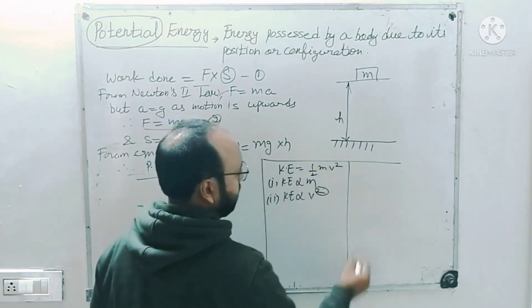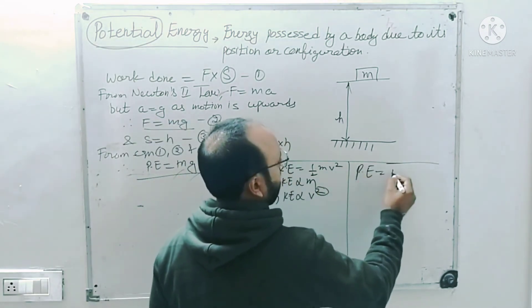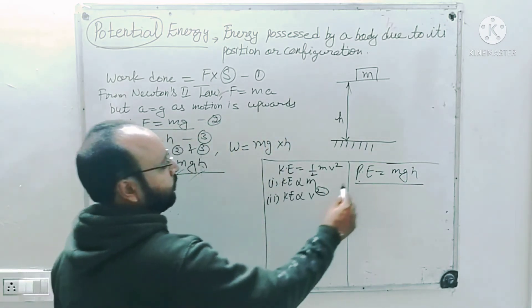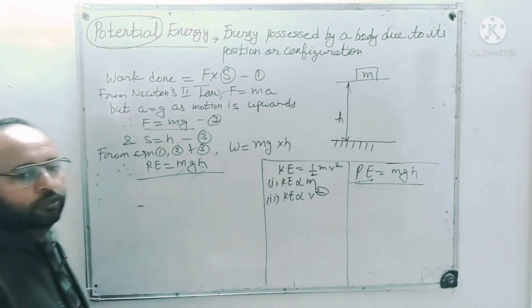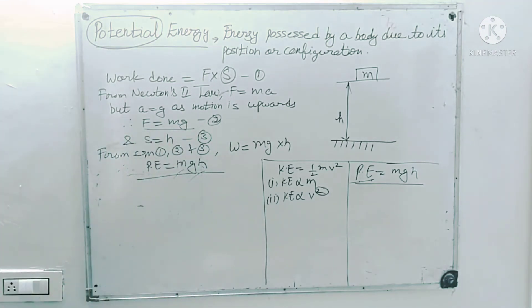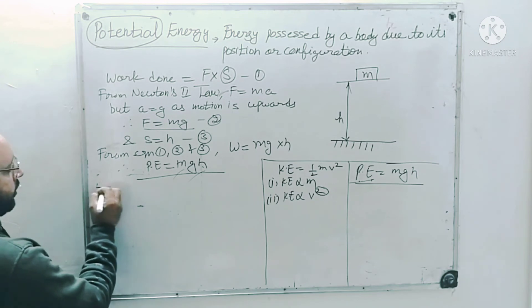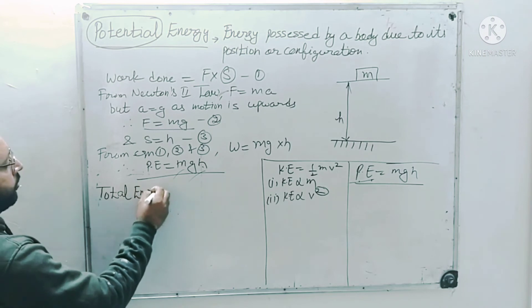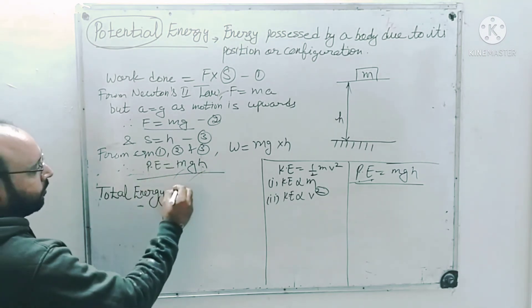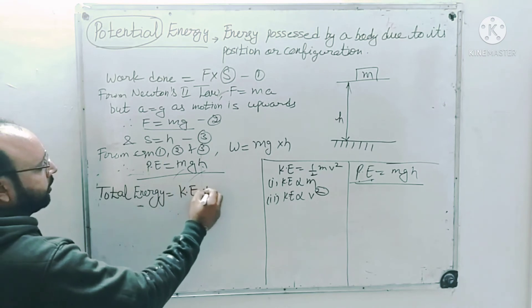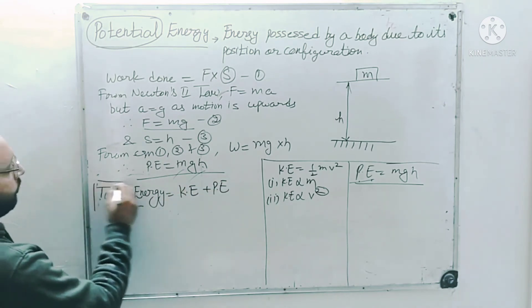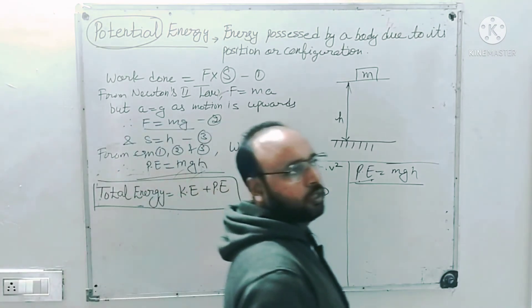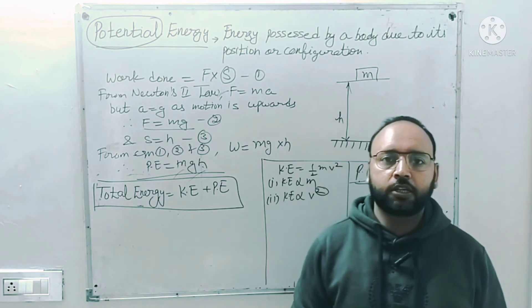Energy possessed by a body due to its position or configuration is potential energy. These are the two types of mechanical energy. When the body is in motion, we calculate the total mechanical energy, which is equal to the sum of kinetic energy and potential energy. We are going to use this in the next derivation — the law of conservation of energy.